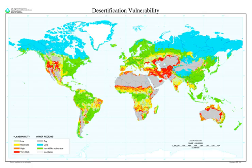Drylands occupy approximately 40 to 41 percent of Earth's land area and are home to more than 2 billion people. It has been estimated that some 10 to 20 percent of drylands are already degraded, the total area affected by desertification being between 6 and 12 million square kilometers, and that about 1 to 6 percent of the inhabitants of drylands live in desertified areas, and that a billion people are under threat from further desertification. As of 1998, the then-current degree of southward expansion of the Sahara was not well known, due to a lack of recent measurable expansion of the desert into the Sahel at the time.